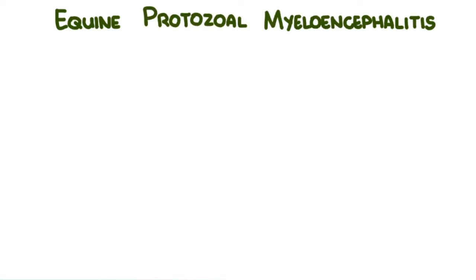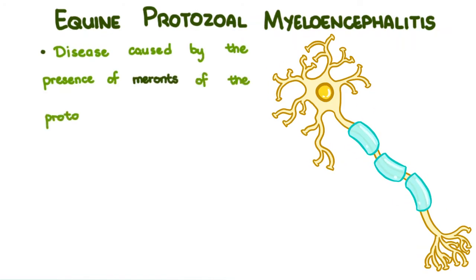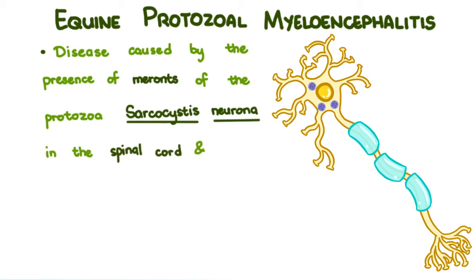Equine Protozoal Myeloencephalitis is a disease caused by the presence of meronts of the protozoa Sarcosystis neurona in the spinal cord and brain of horses.